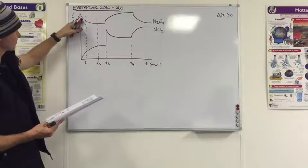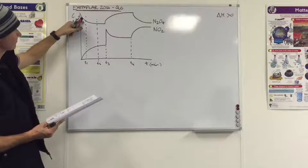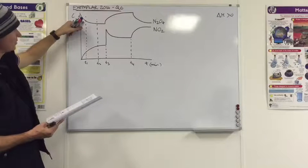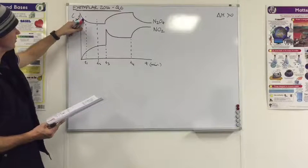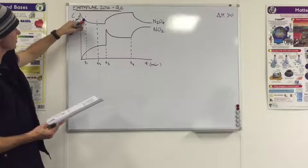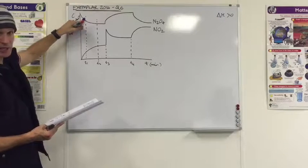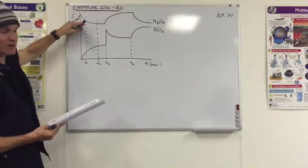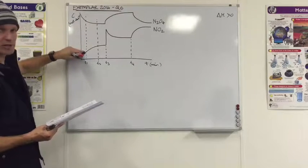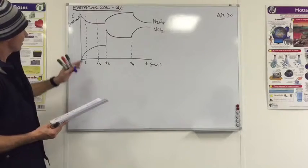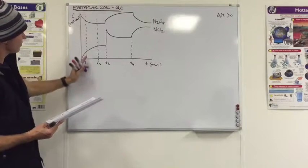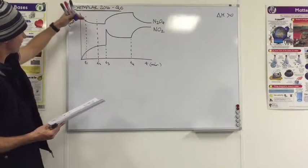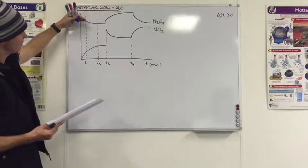The rate of the forward reaction is always going from the N2O4 to the NO2. So in fact, this is still reducing in amount. So therefore, that reaction is still going faster than this one. It hasn't quite caught up yet. So the first one at T1, whilst it's still sloping, the forward reaction is going to be faster.